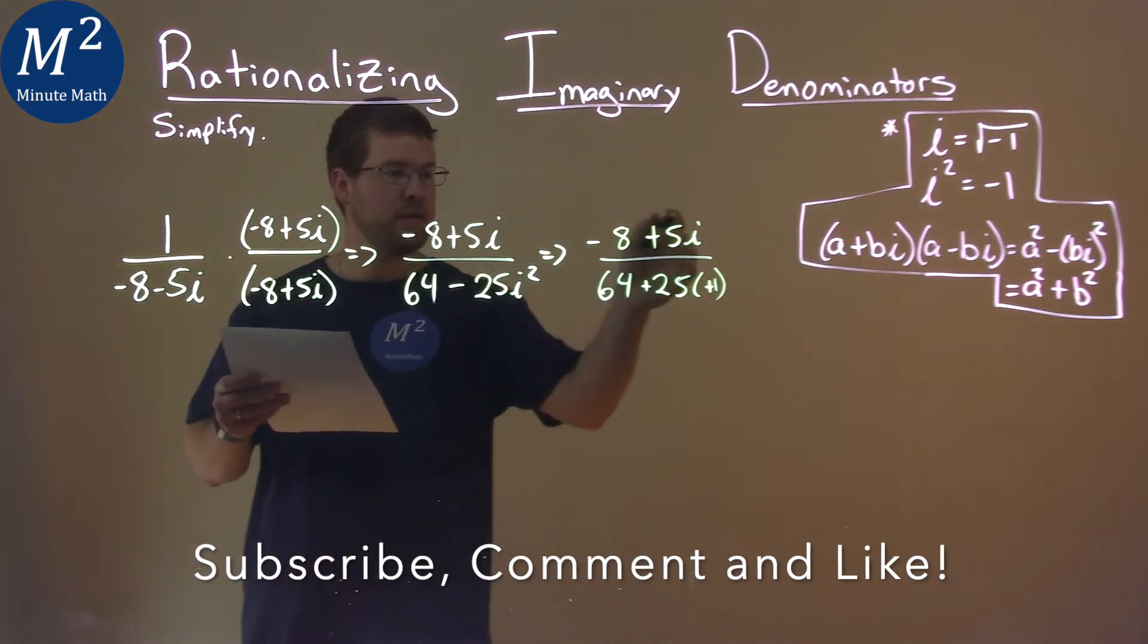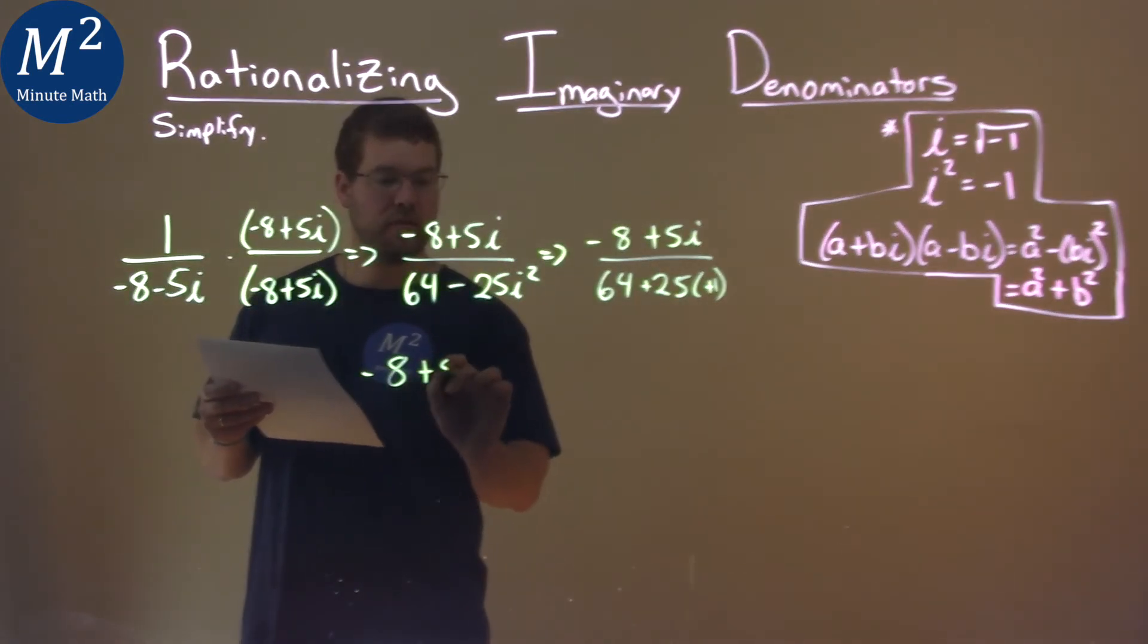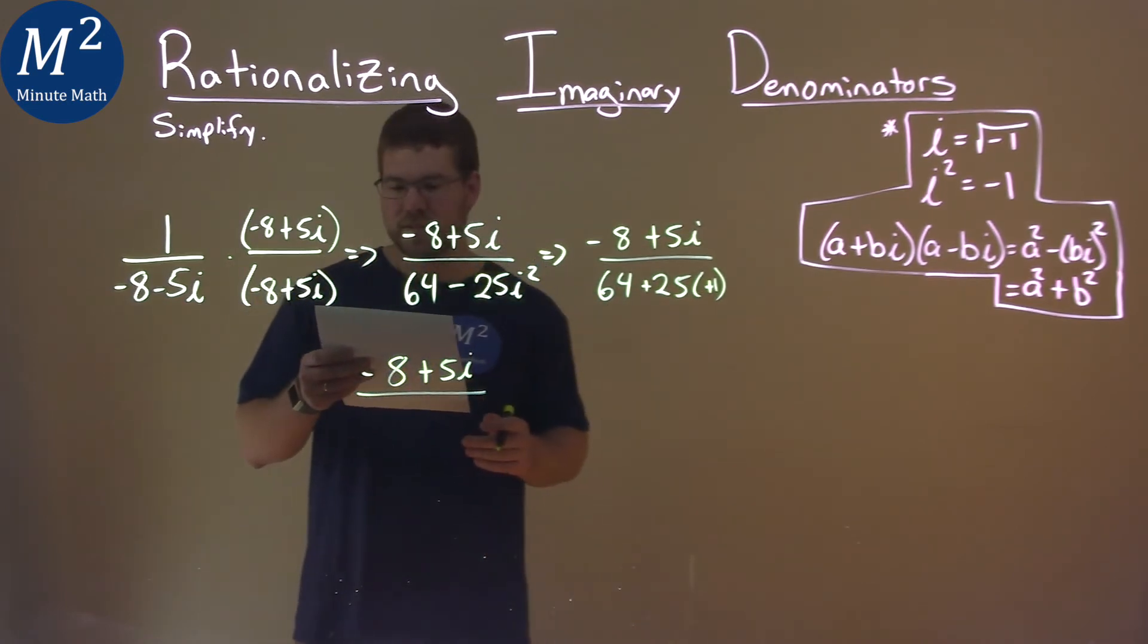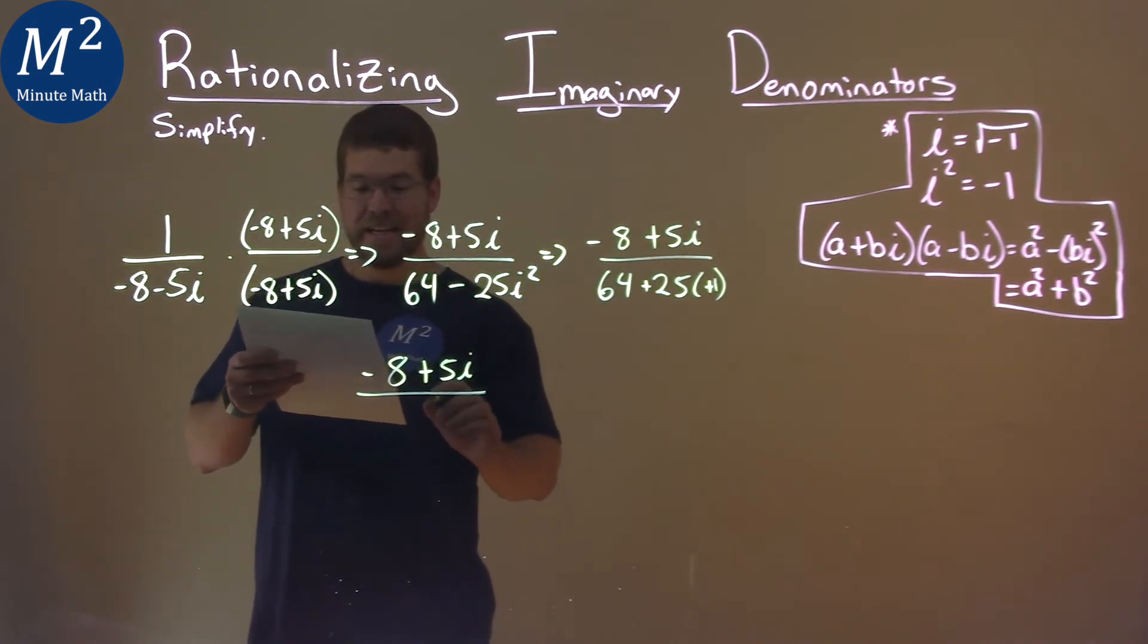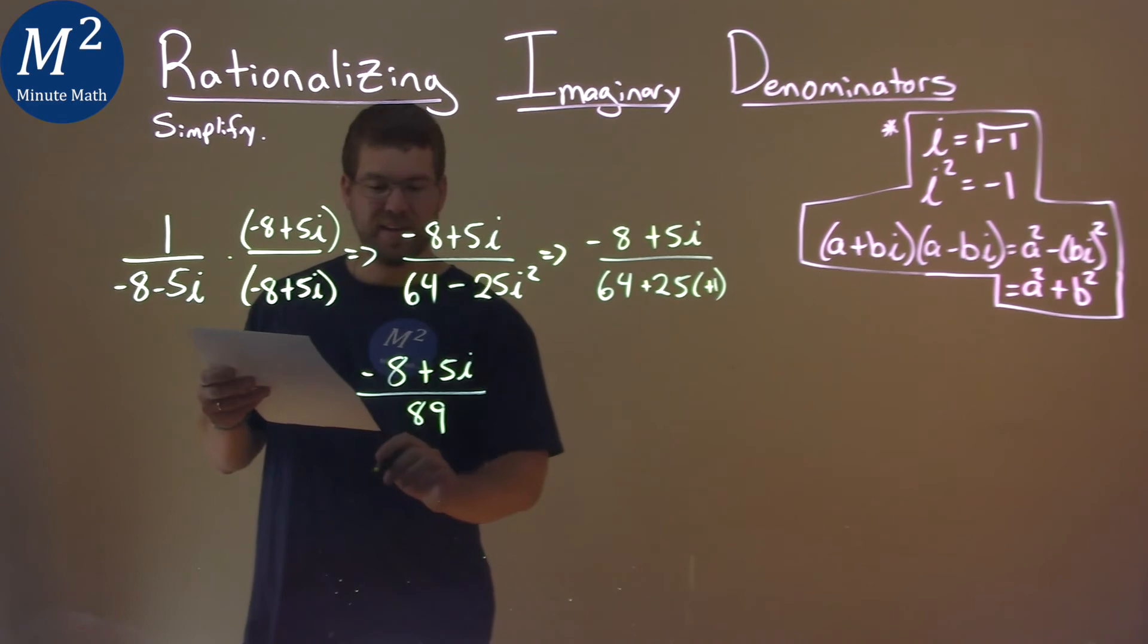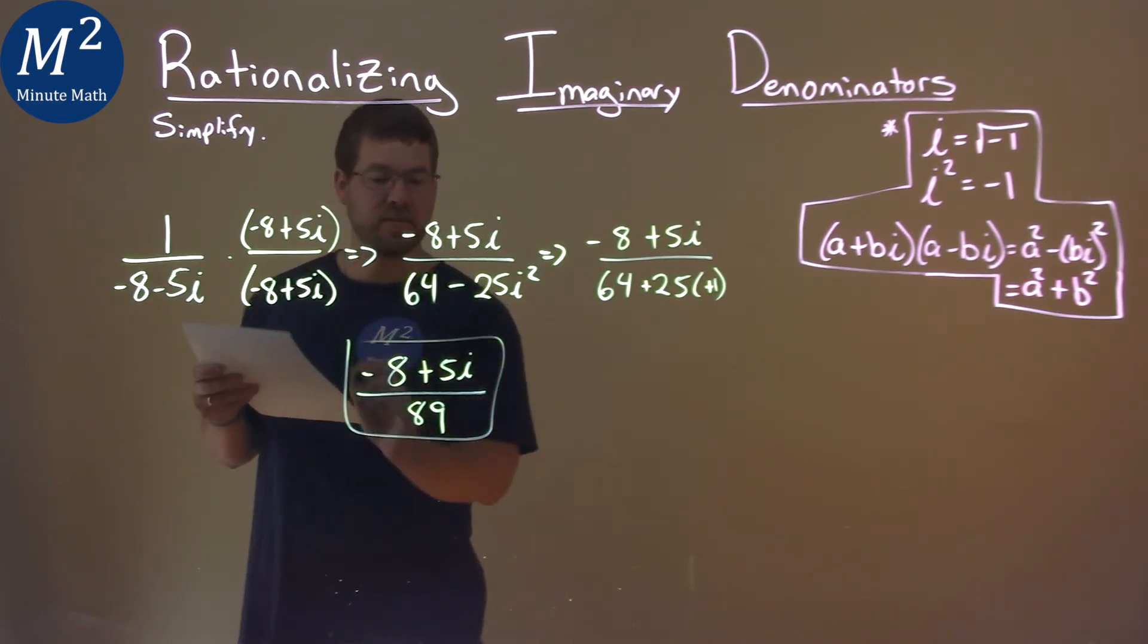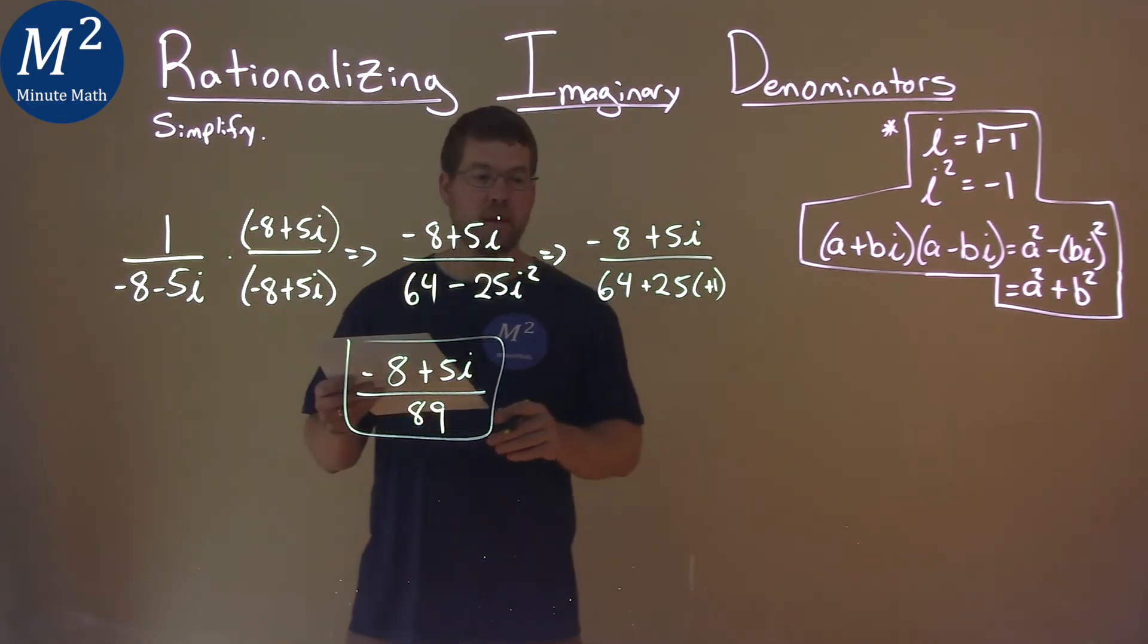So, we keep simplifying this. Negative 8 plus 5i comes down. 64 plus 25 is 89. And really, that's it. That's our final answer. Negative 8 plus 5i over 89.